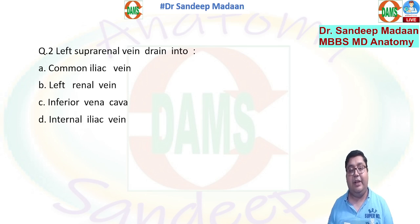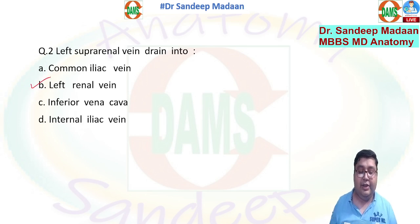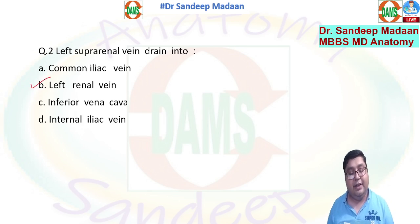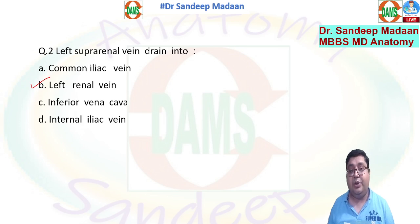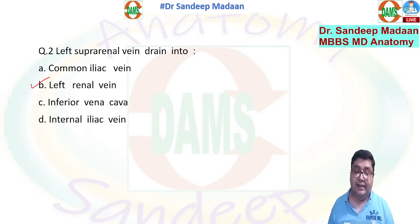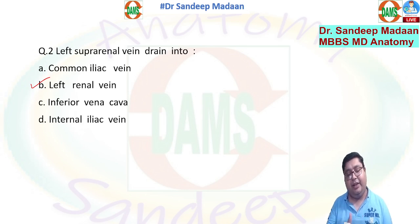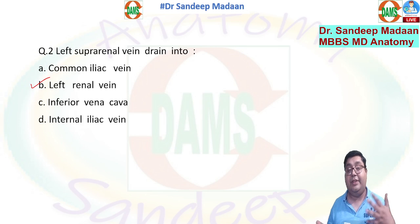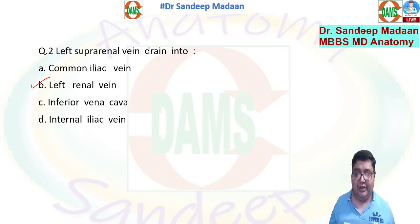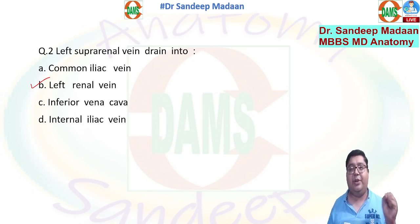The left suprarenal vein and left gonadal vein both drain into the left renal vein, whereas their right counterparts drain into the IVC. The reason is embryological: the IVC develops on the right side, so the left-sided veins did not get the chance to drain there. They do not cross the midline and remain on the left side only.